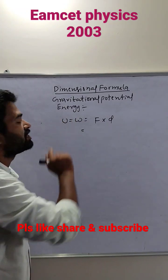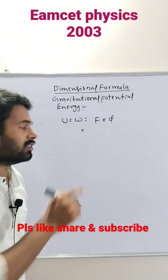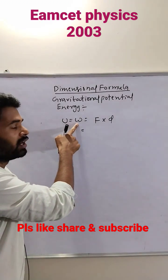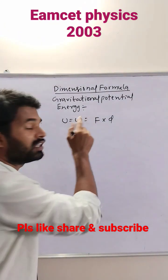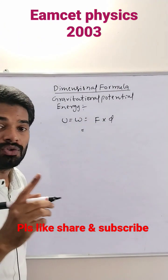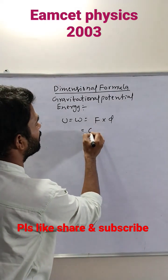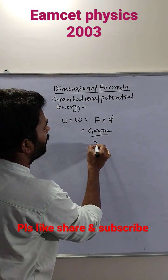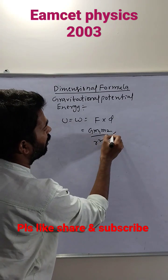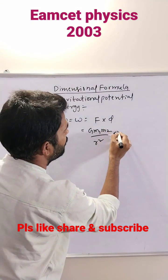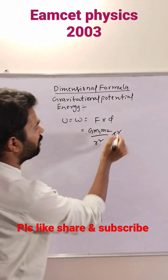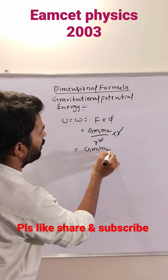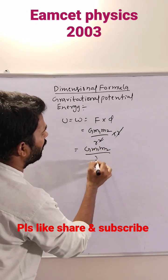Gravitational potential energy — nothing but gravitational potential energy. U is equal to work done. Work done equals F into D. Here F is the universal gravitational force, that is capital G M1 M2 by R squared, into R — also distance, D also distance. R I will write 1R, 1R cancels, so the formula will be G M1 M2 by R.